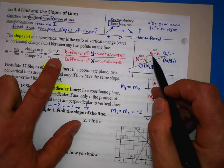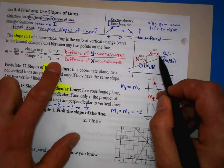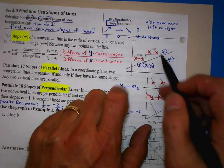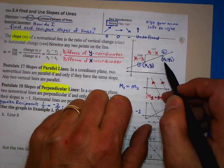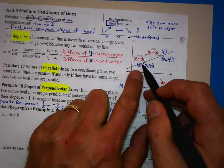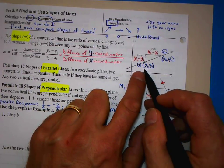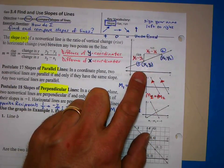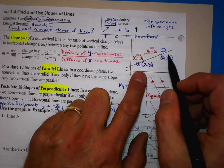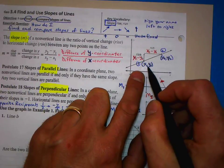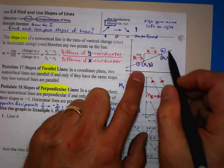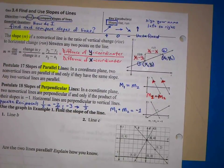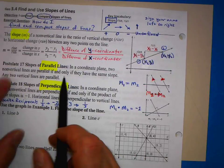It does not matter which point you label as point one — you could switch them. Just make sure that whatever you label as point one uses X1 and Y1, and whatever you label as point two uses X2 and Y2. This is a review from algebra — in fact all of this really is.